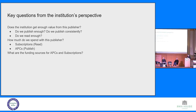From the institution's perspective, there are some key questions to consider when thinking about entering into a transformative agreement. Does the institution get enough value from that publisher? Do we publish enough with this particular publisher, and do we publish consistently — is the pattern roughly the same year over year? And do we get enough usage of that publisher's content — do we read enough from them? Pretty basic questions, and fairly easy to answer at a high level.